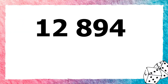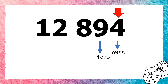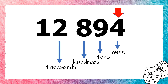Now, without using the place value chart, let us again identify the place values of the digits in 12,894. Remember to start at the rightmost digit. The place value of 4 is 1s, 9 is 10s, 8 is 100s, 2 is 1,000s, and 1 is 10,000s.